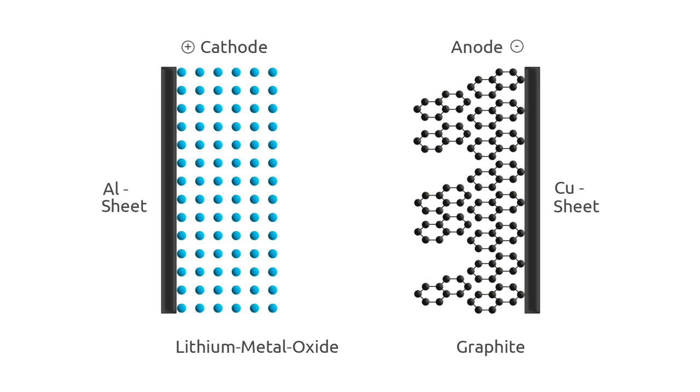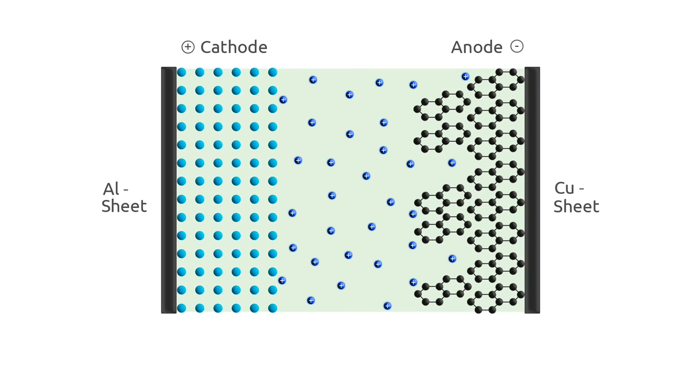But what is happening inside the cell? A liquid electrolyte consisting of solvents and a conducting salt that contains lithium enables the lithium ions to travel between the electrodes.